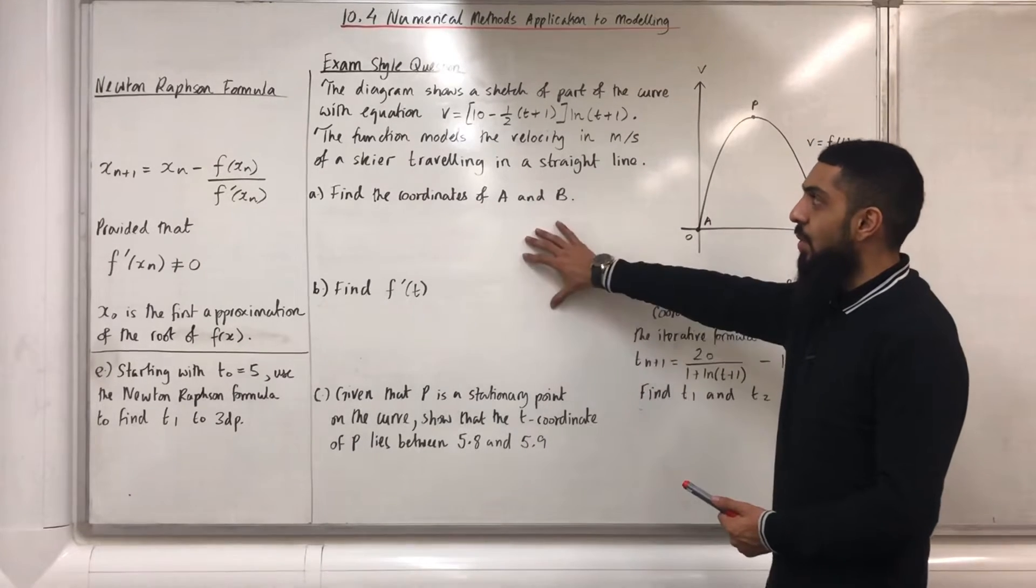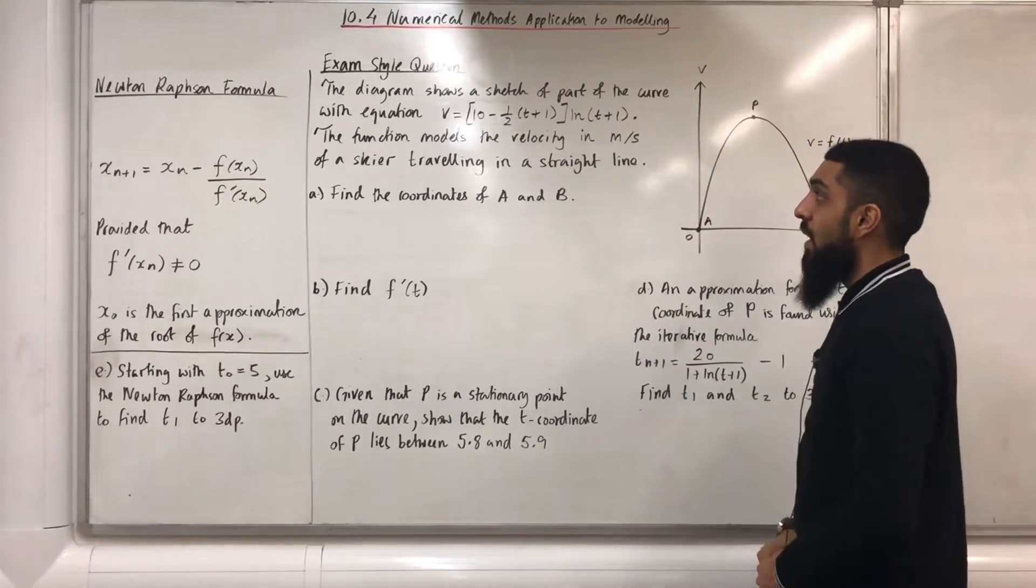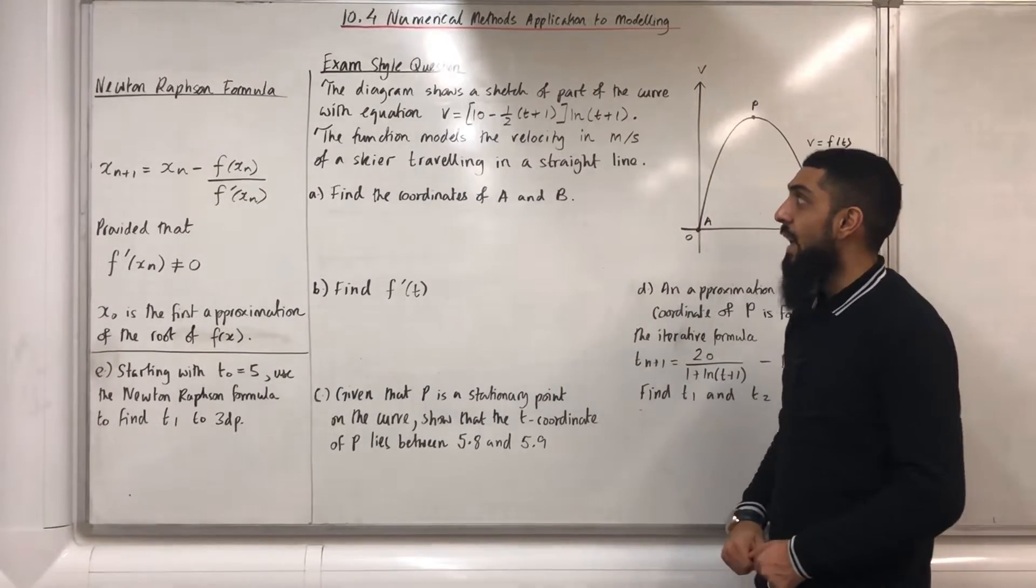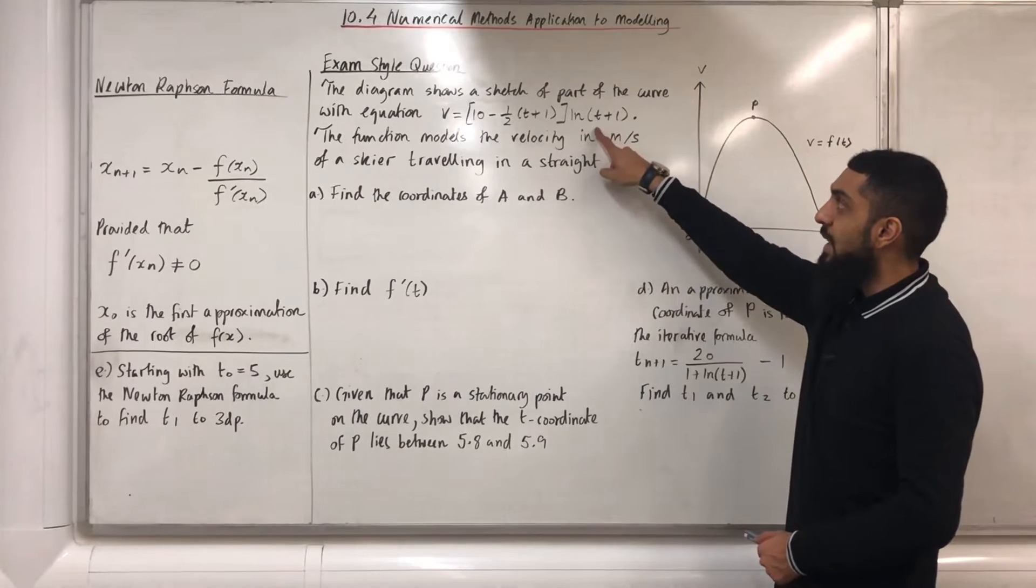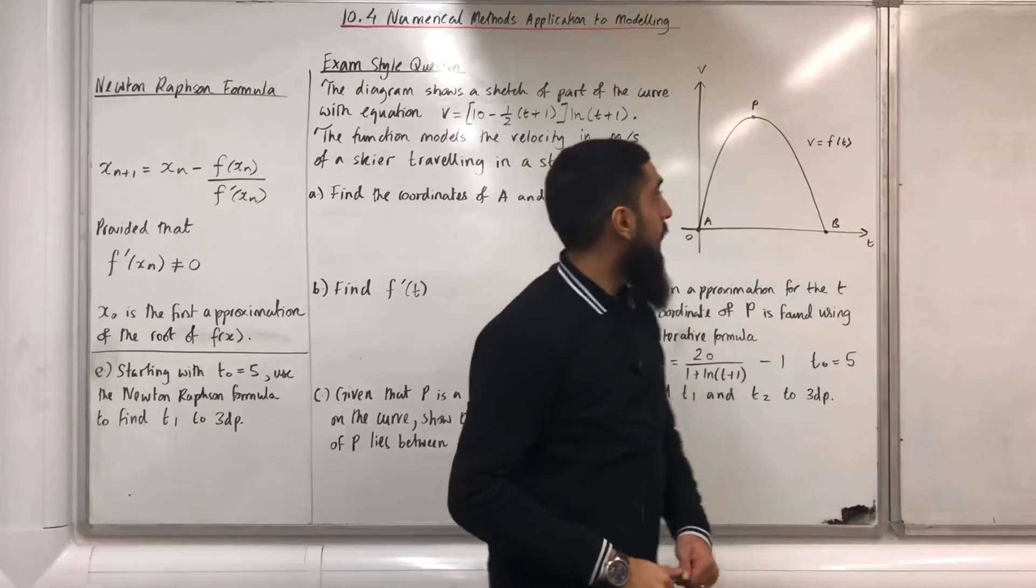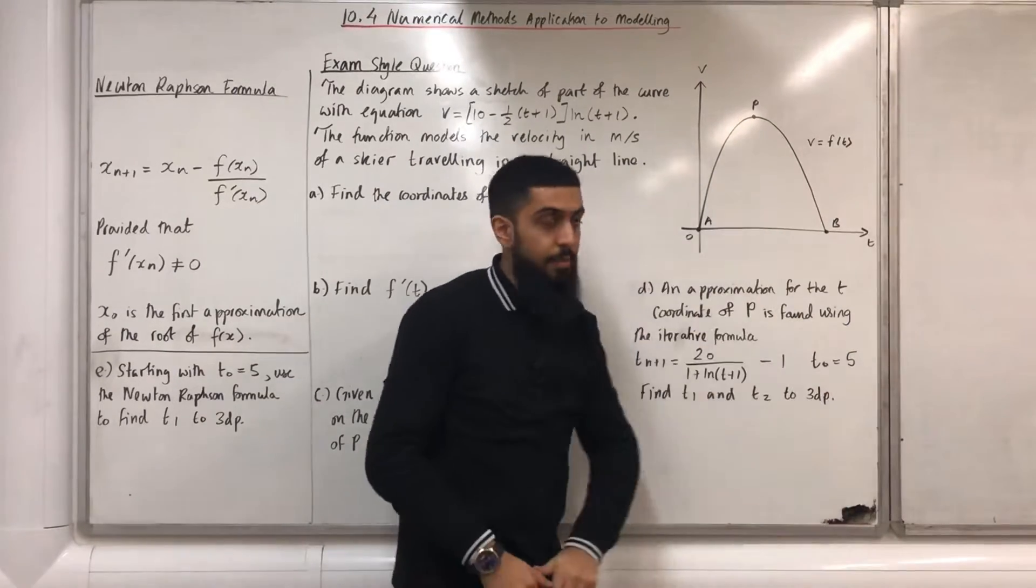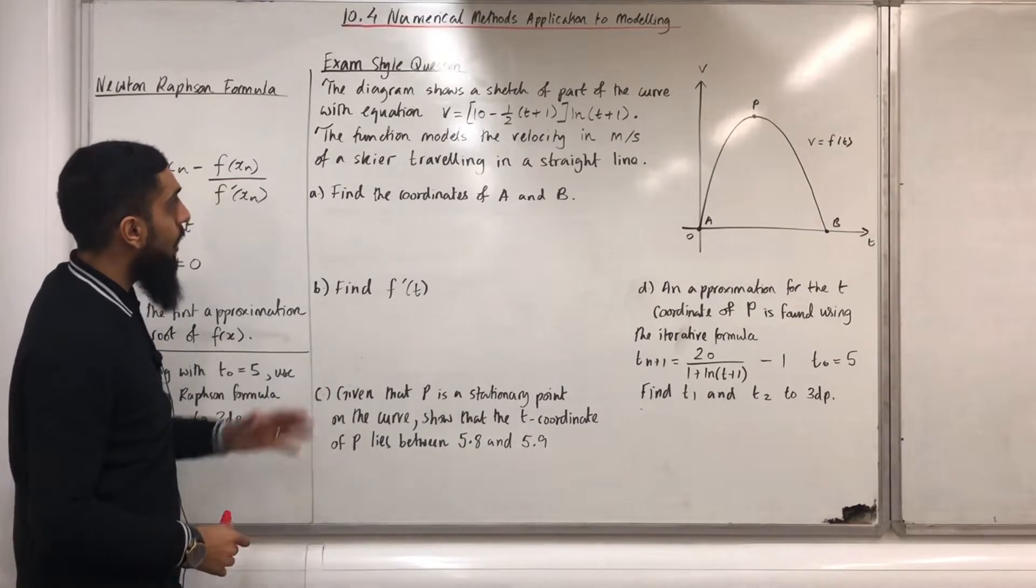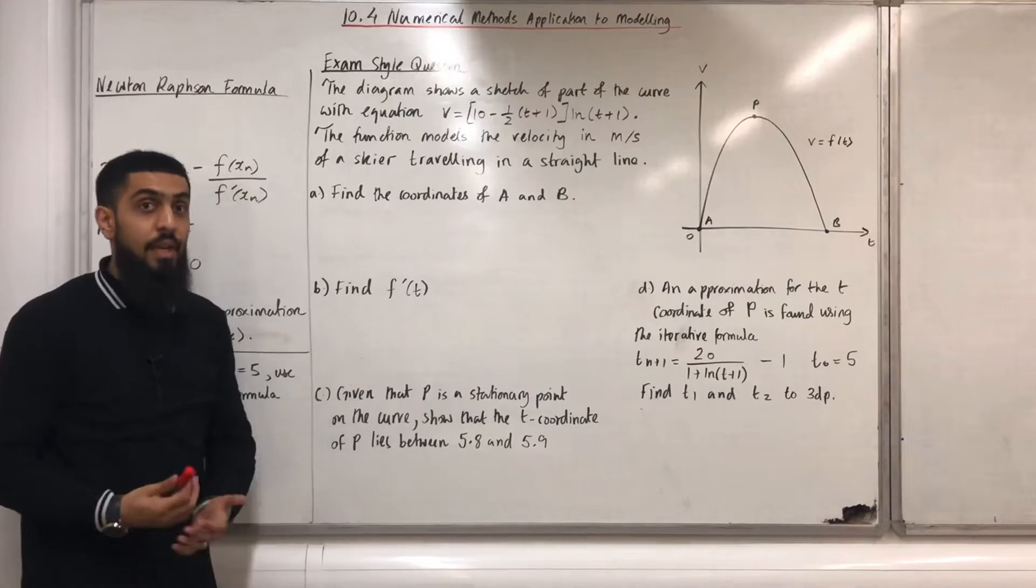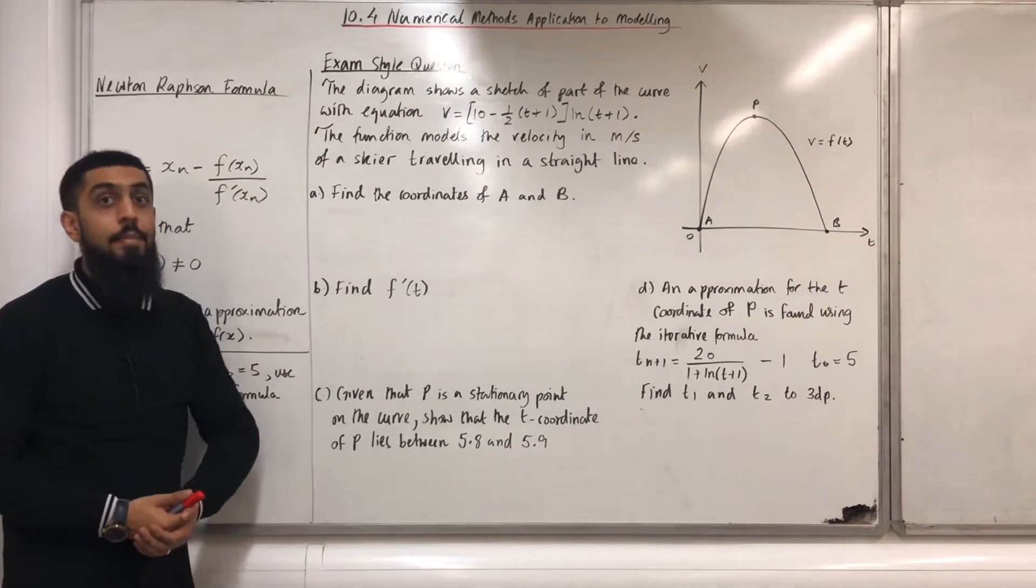Here's an exam style question. The diagram shows a sketch of part of the curve with equation v = [10 - 0.5(t+1)]ln(t+1). v is a function of t. I've labeled it as v = f(t). The function models the velocity in meters per second of a skier traveling in a straight line. Part A finds the coordinates of A and B.